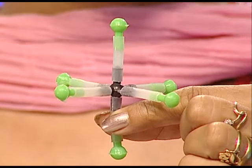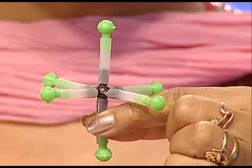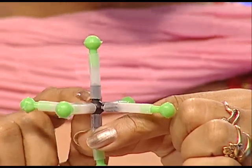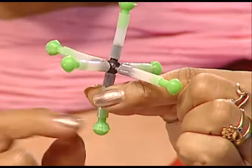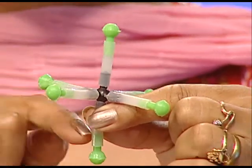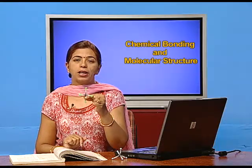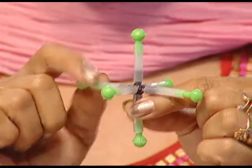Another example is SF₆ — sulfur hexafluoride. Here the black ball represents the sulfur atom surrounded by six fluorine atoms in six covalent bonds. Six covalent bonds means twelve electrons are surrounding the sulfur atom — again an exception to the octet rule.